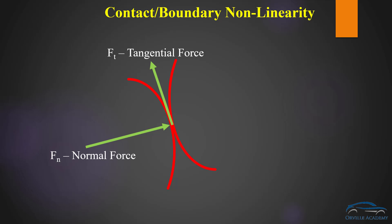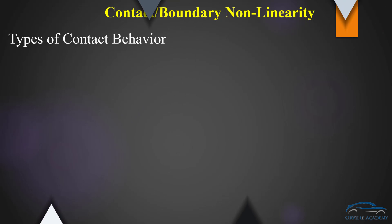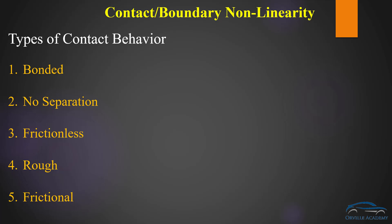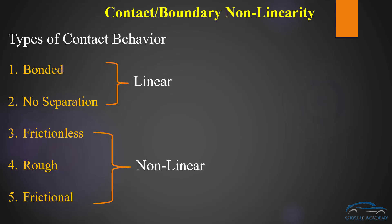In ANSYS Mechanical we have a total of 5 types of contact: bonded, no separation, frictionless, rough, and frictional. Out of these 5 contacts, the first 2 are also known as linear contacts and the remaining 3 are known as nonlinear contacts.